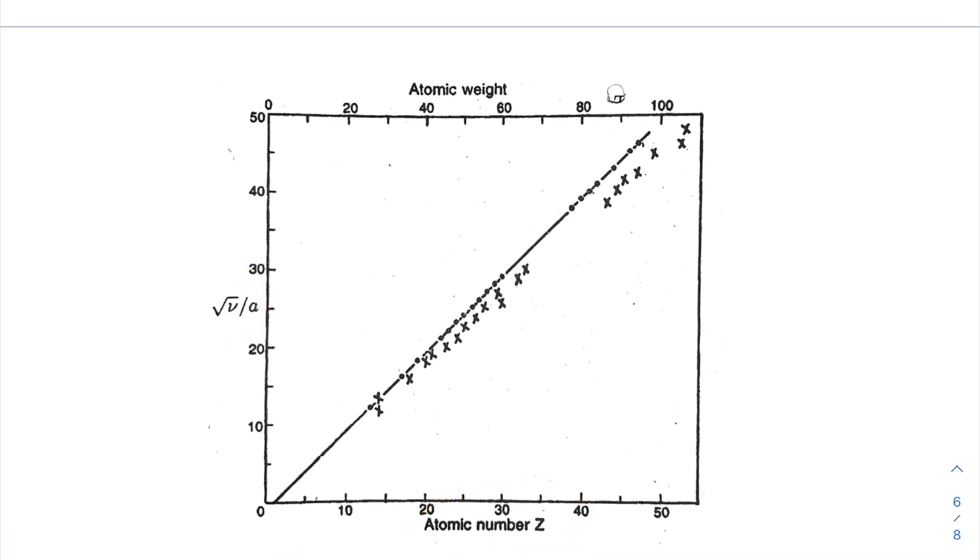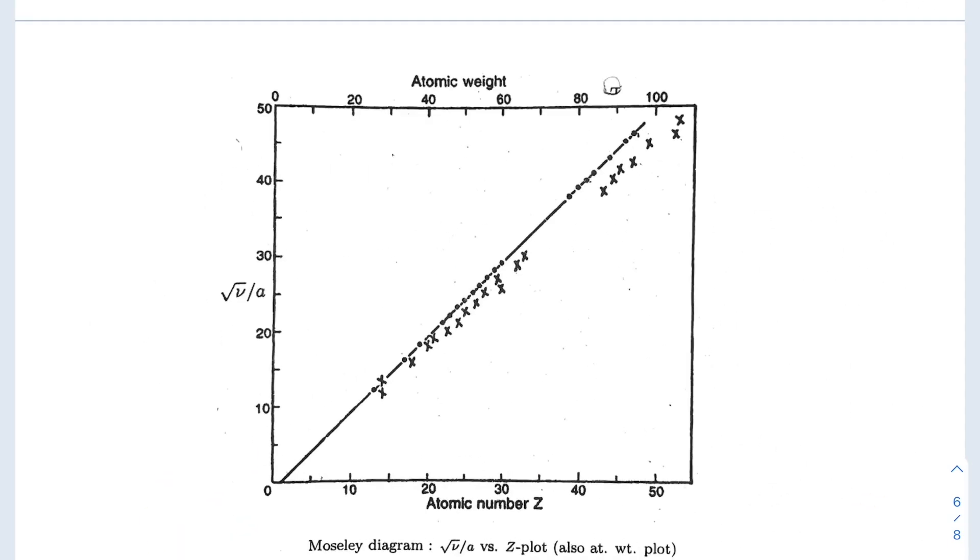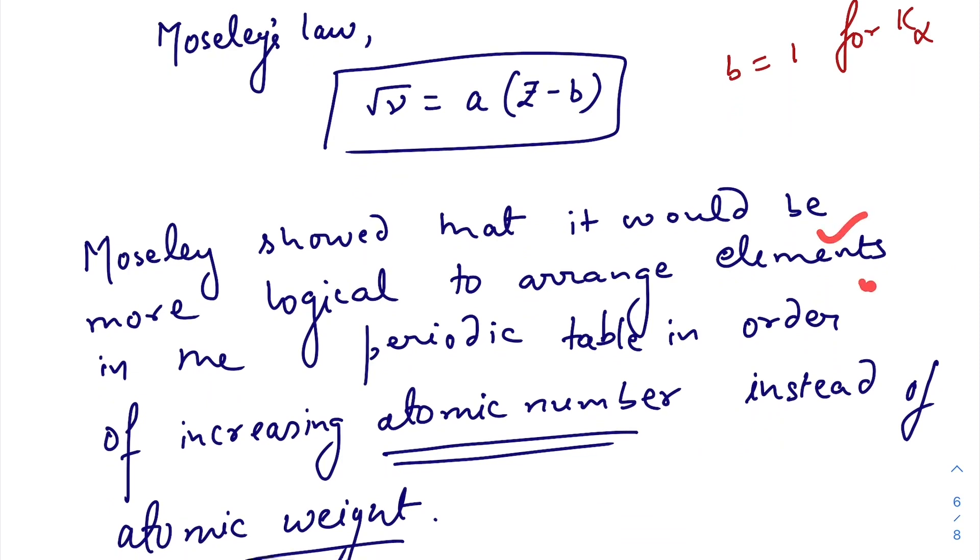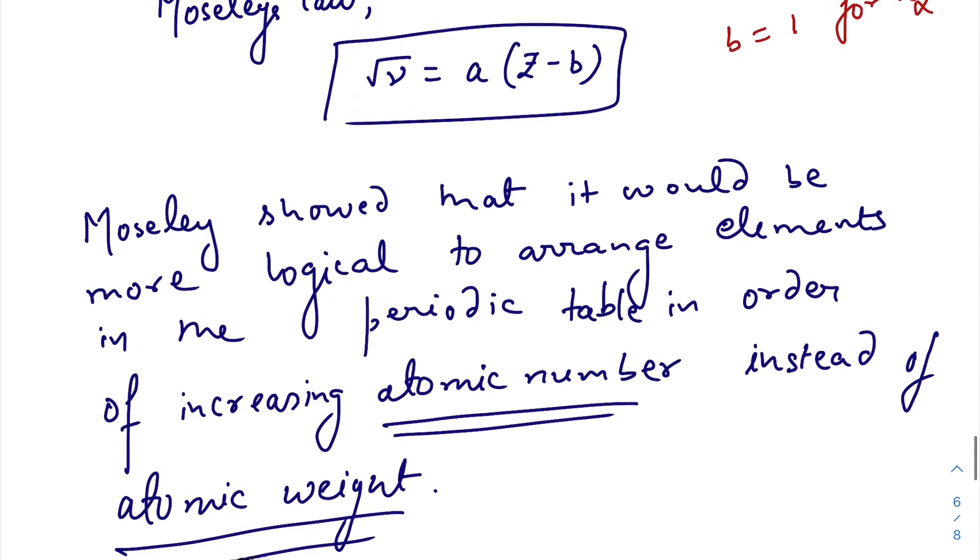From there we can see that the frequency of K alpha lines follows a relation with the atomic number of the target material, and for K alpha line, b is equal to one, nearly equal to one. Moseley showed it would be more logical to arrange elements in the periodic table in order of increasing atomic number instead of atomic weight. This is the most important conclusion of Moseley's work. When this was done, it removed certain anomalies in the order of some elements in the periodic table of Mendeleev.